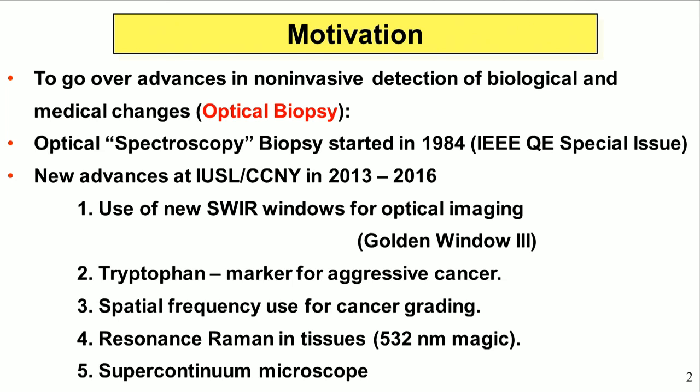I'm going to be talking about four new windows that allow you to go deep into tissue. The key topic today is tryptophan, which we discovered is really the marker of the aggressiveness of cancers. And I want to talk about how spatial frequencies can be used to grade tumors, because that's key in finding out the degree of the cancer.